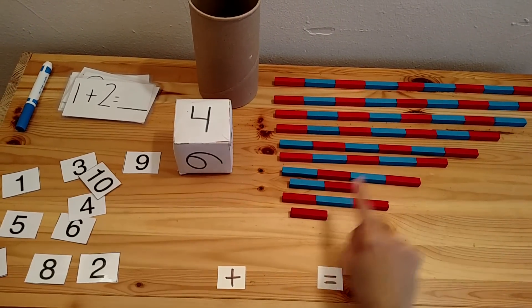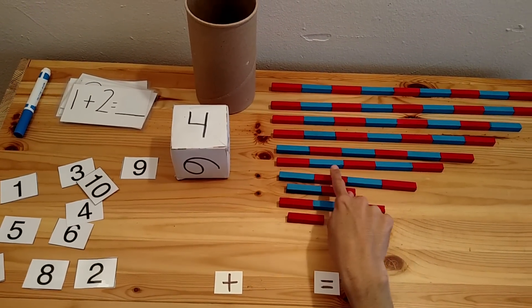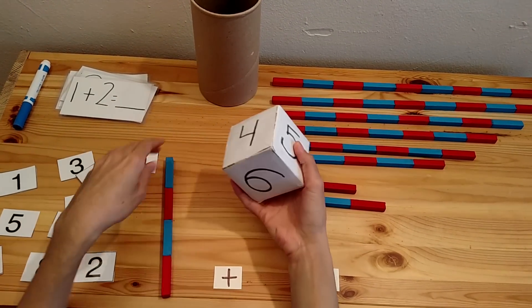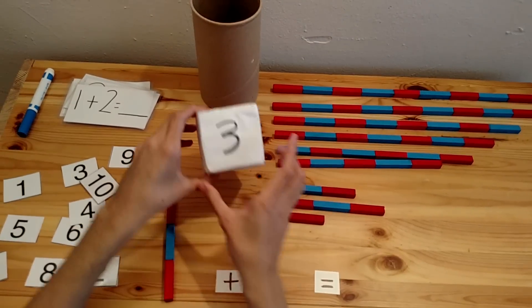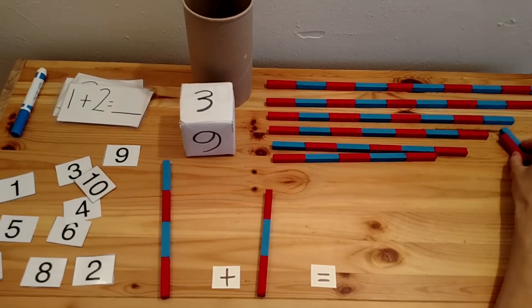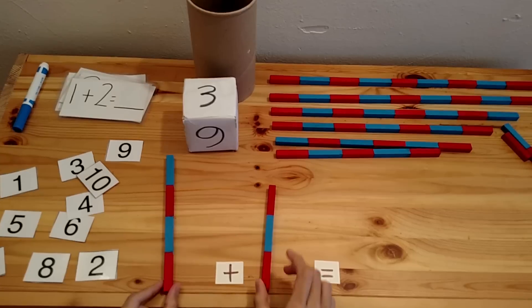You get your little cards here and the child rolls a die. Four. What's four? One, two, three, four. Here's four. Four plus three. Where's three? One, two, three. What is four plus three?